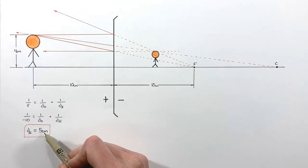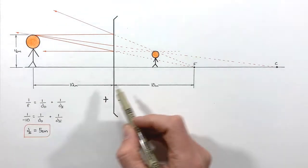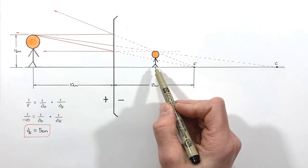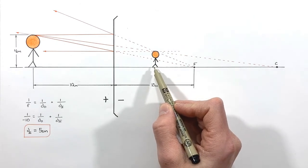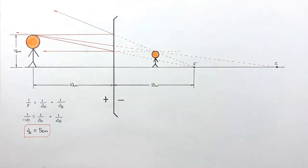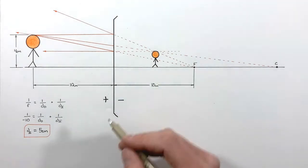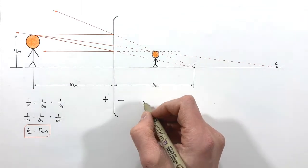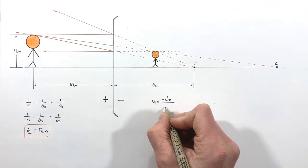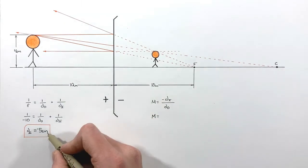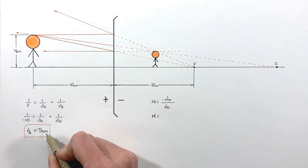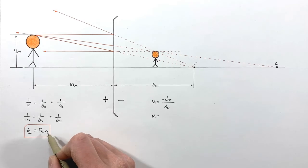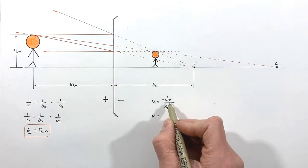Looking at an object distance of 10 centimeters, we can solve for di using the mirror equation, and we find the image distance is negative 5 centimeters — which is exactly what we saw with our ray tracing diagram.